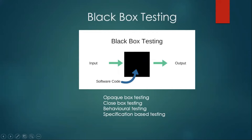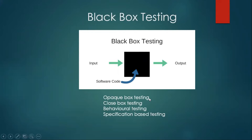The tester is completely unaware of the code written behind the product. It is called black box testing because you can't see through it — you can't see what is inside. It is also known as closed box testing, opaque box testing, behavioral testing, and specification-based testing.